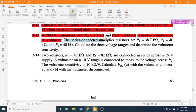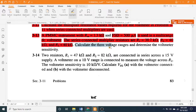The series-connected multiplier resistors are R₁ = 38.7 kΩ, R₂ = 40 kΩ, and R₃ = 40 kΩ. Calculate the three voltage ranges and determine the voltmeter sensitivity.